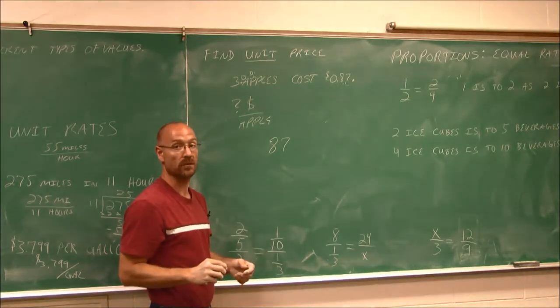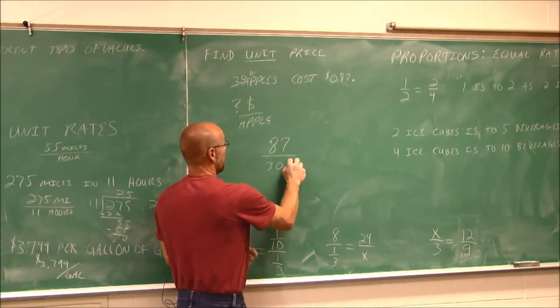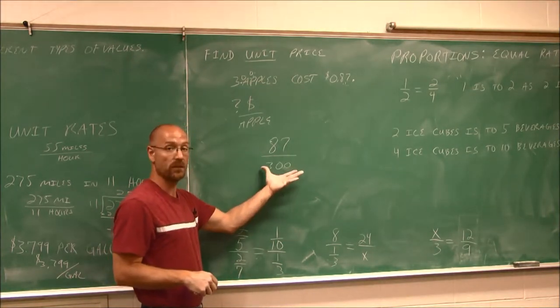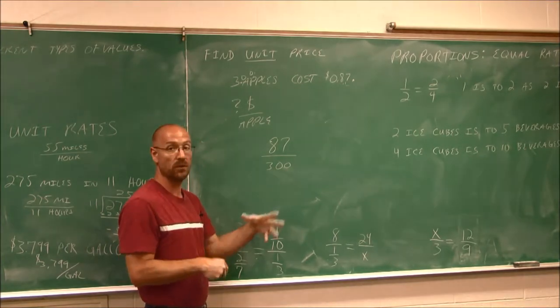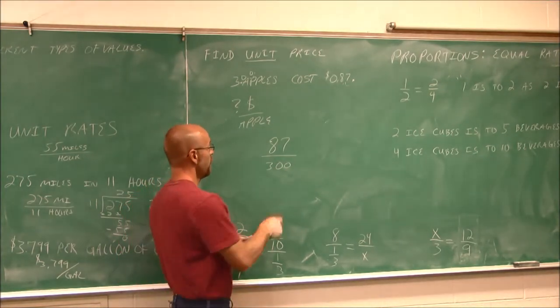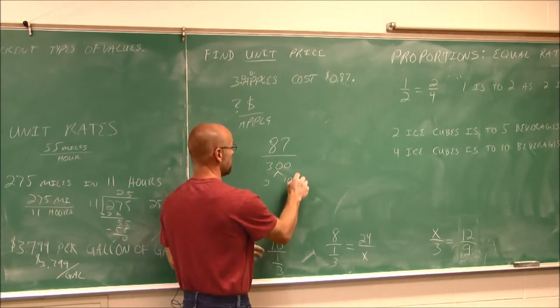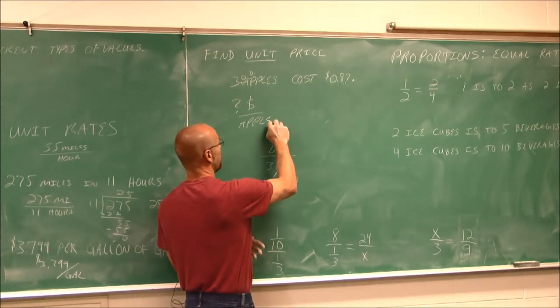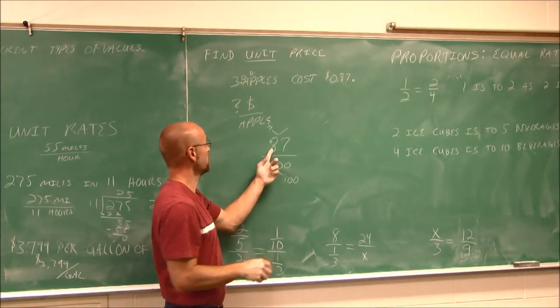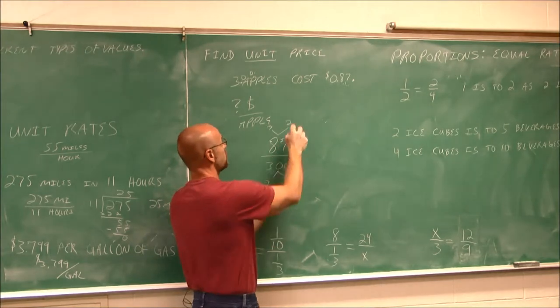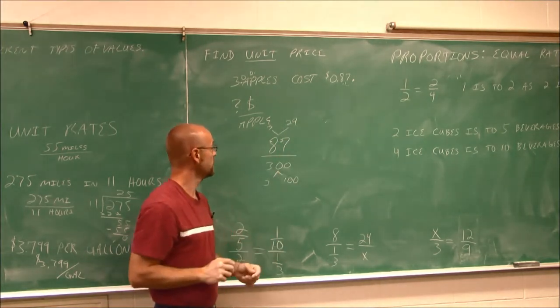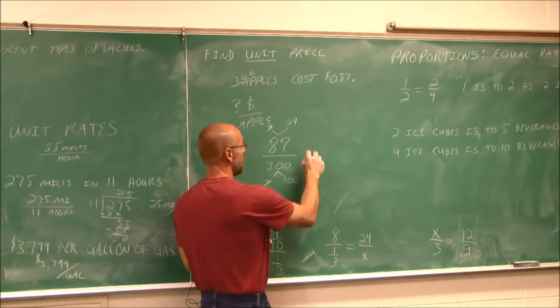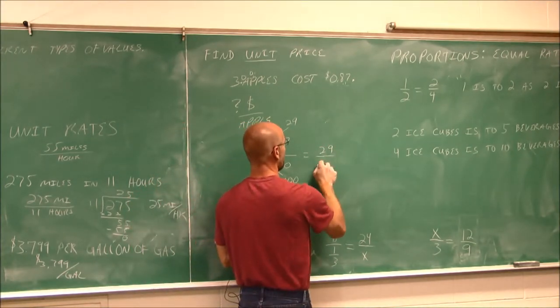Now, this looks like a big, intimidating fraction. But instead of doing the division like we did before, let's use prime factorization. I know that this is 3 times 100. And 87, I know that's divisible by 3. 3 goes into 8 twice, with a remainder of 2. 3 goes into 27 nine times. And let's reduce that 3 and that 3. They simplify to 1. And now this is 29 hundredths.